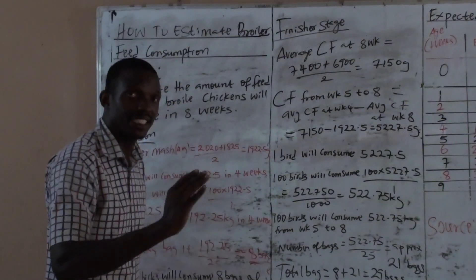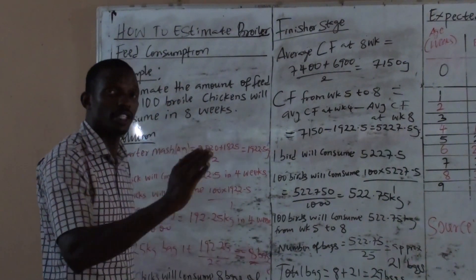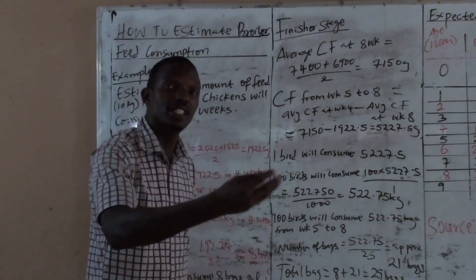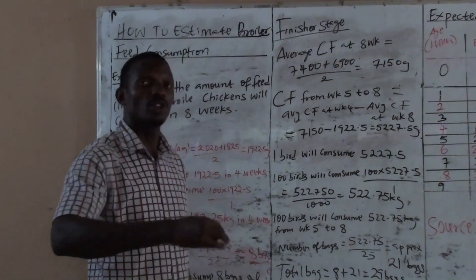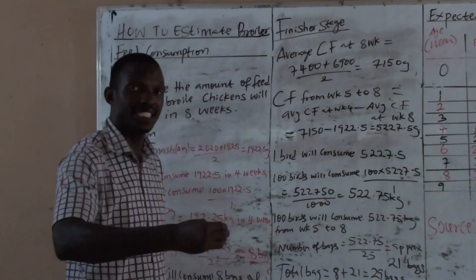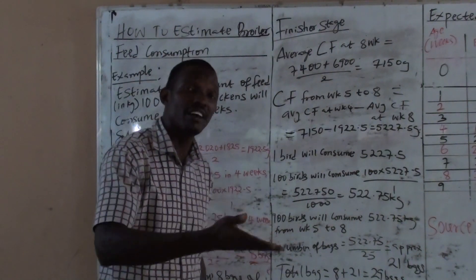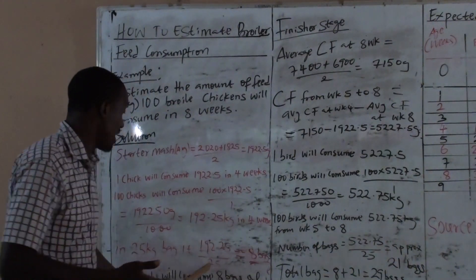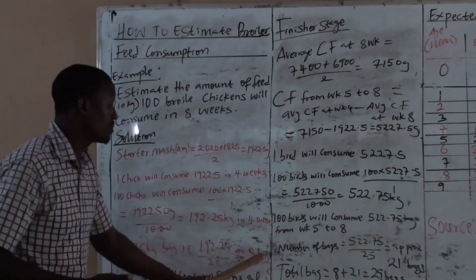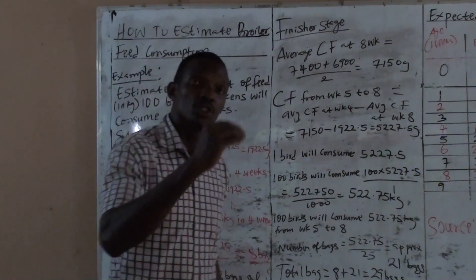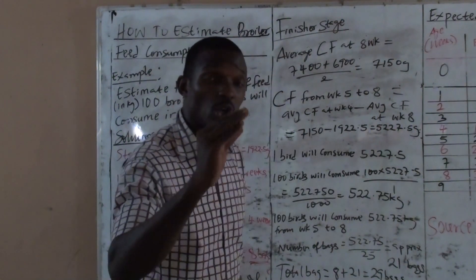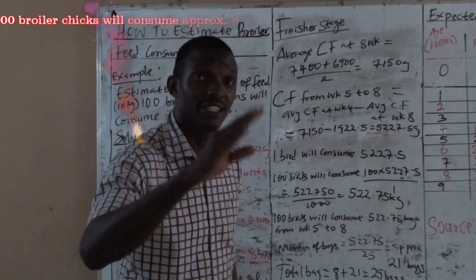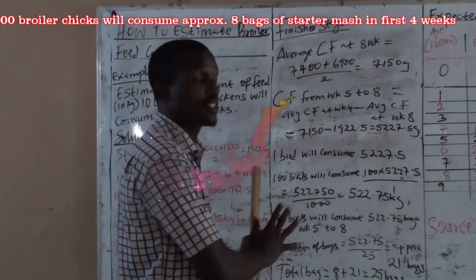So 100 birds will consume approximately 192.5 kg in the first 4 weeks on starter mash. Converting to bags — dividing by 25 kg per bag — gives approximately 8 bags. So 100 broilers will consume approximately 8 bags of starter mash for the first 4 weeks.